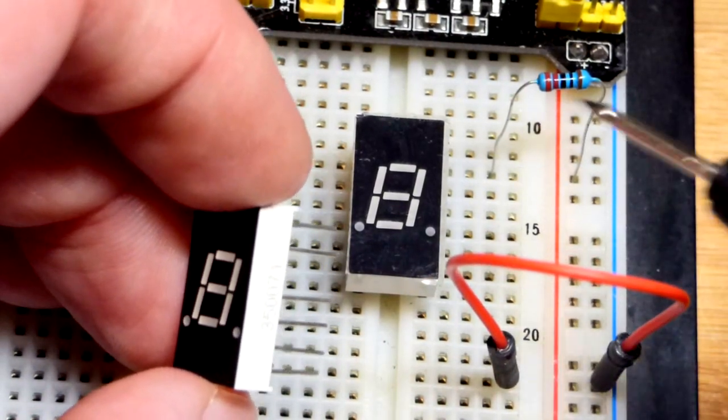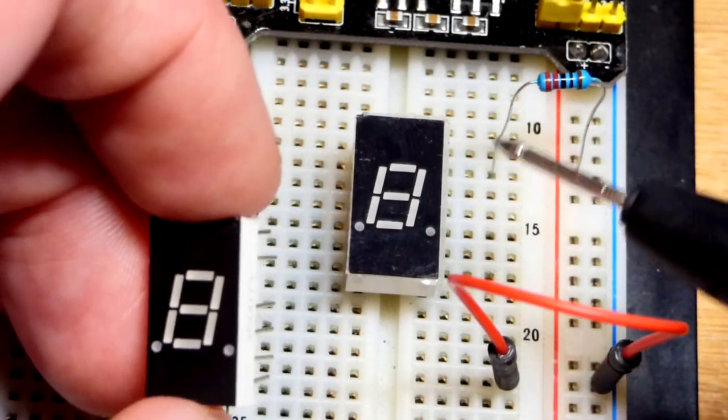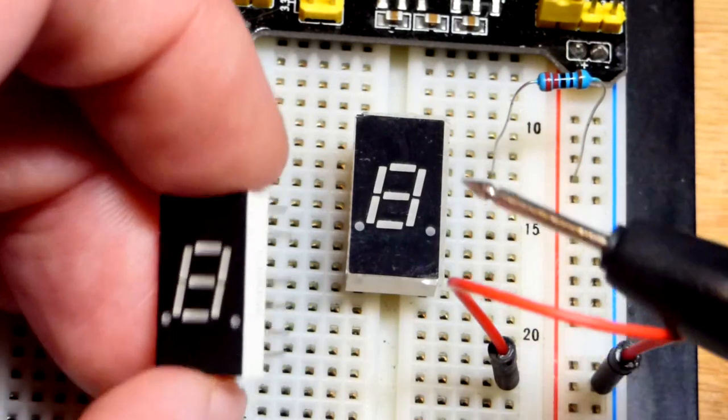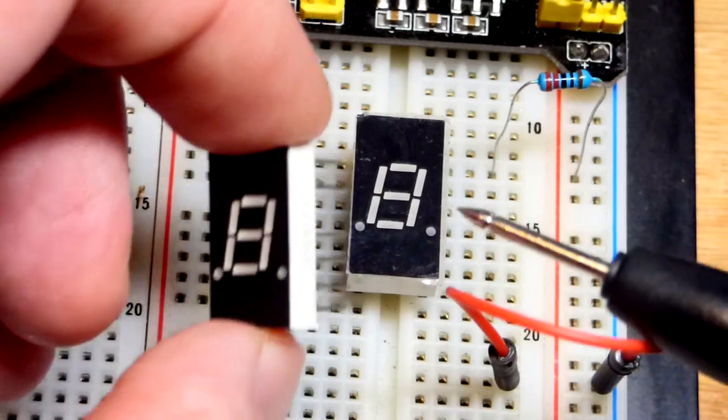So I have this pin to the positive rail right there. These are all LEDs, as I said. This is the common point. And so everything else goes to the negative rail, except for one other pin.